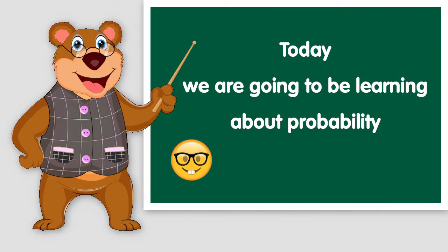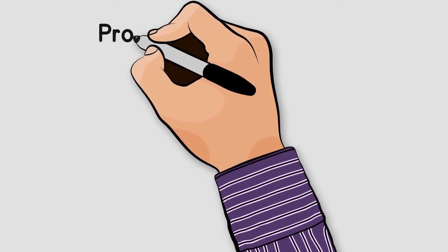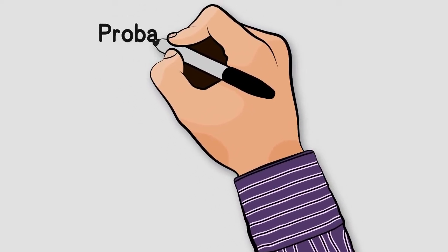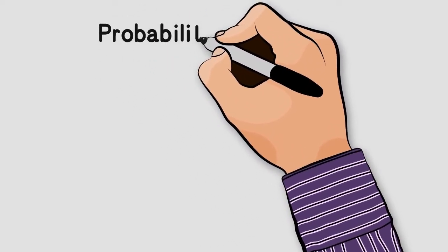Today we are going to be learning about probability. We will see how to calculate the probability of something happening by looking at some examples. Probability is the chance that something will happen, or how likely it is that an event will occur.